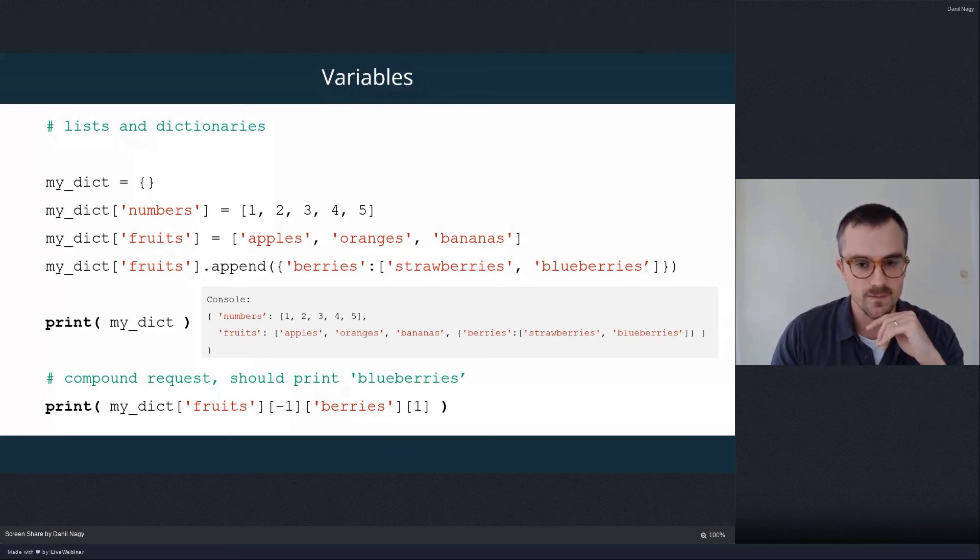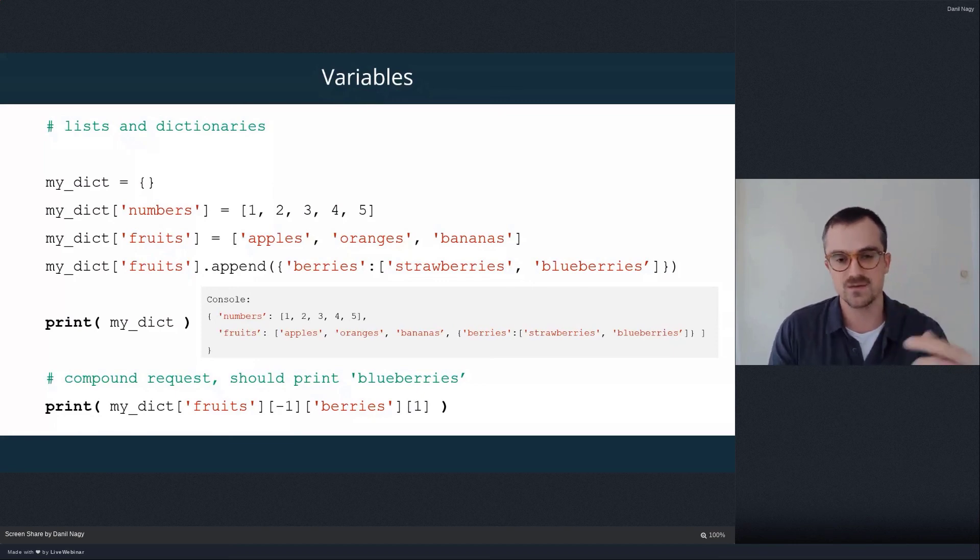So if we print my_dict at this point, we're going to get something like this. You can see the hierarchy of the data set. We have a dictionary defined by curly braces. Within that, we have two keys. We have a list in the first entry, and then we have another list in the second.